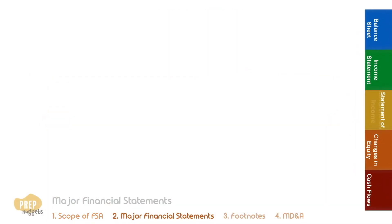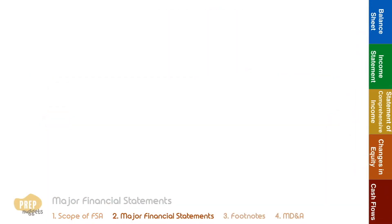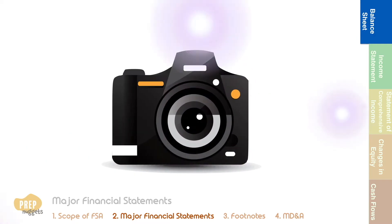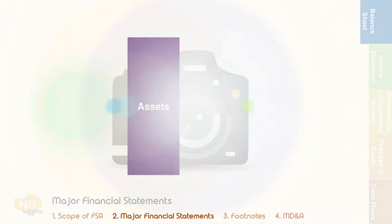There are five key financial statements: the balance sheet, income statement, other comprehensive income statement, statement of changes in equity, and the statement of cash flows. The balance sheet can be viewed as a snapshot of the firm's financial position.